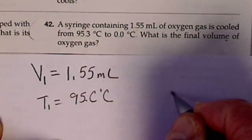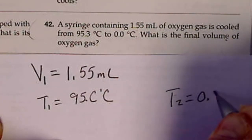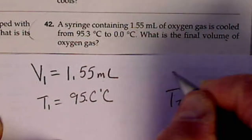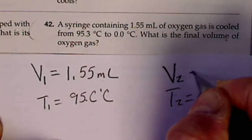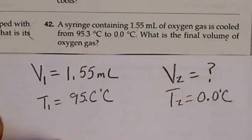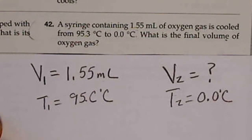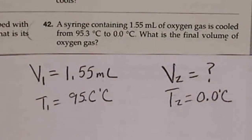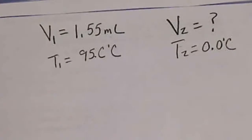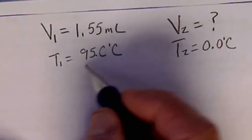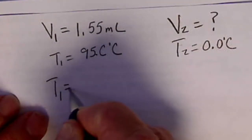T2 is 0 degrees Celsius, and we're asked to solve for the final volume. Any time we have a temperature in a gas law, it's imperative that we put the temperature in degrees Kelvin. So for us to solve this problem, our T1 needs to be in Kelvin.